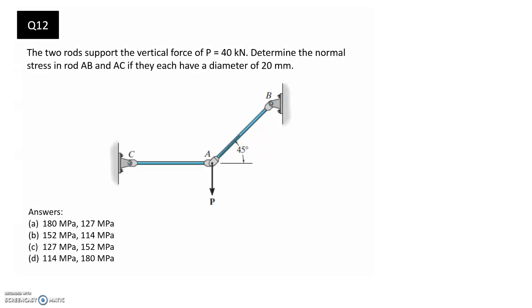The two rods support the vertical force of P equals 40 kilonewtons. Determine the normal stress in rod AB and BC if they each have a diameter of 20 millimeters.